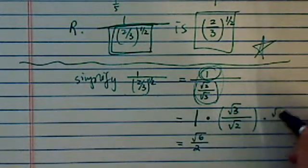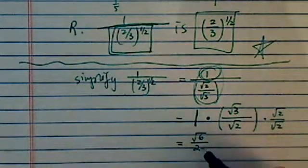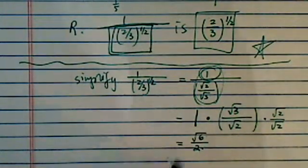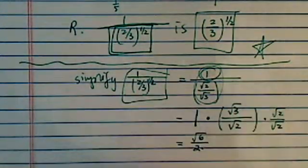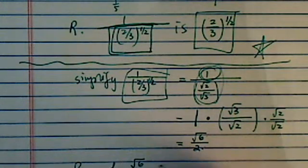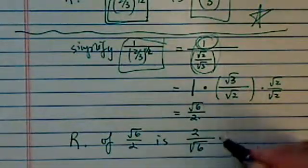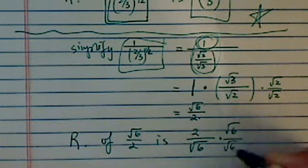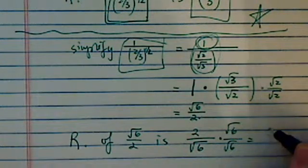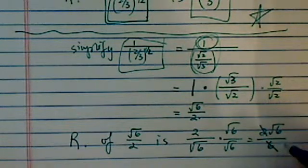And we have a radical of 6 over 2. The reason is I did a radical 2, radical 2. So this one becomes a 2 and radical 6. So now we simplify this, and then the reciprocal of radical 6 over 2 is 2 on top, radical 6 on the bottom.